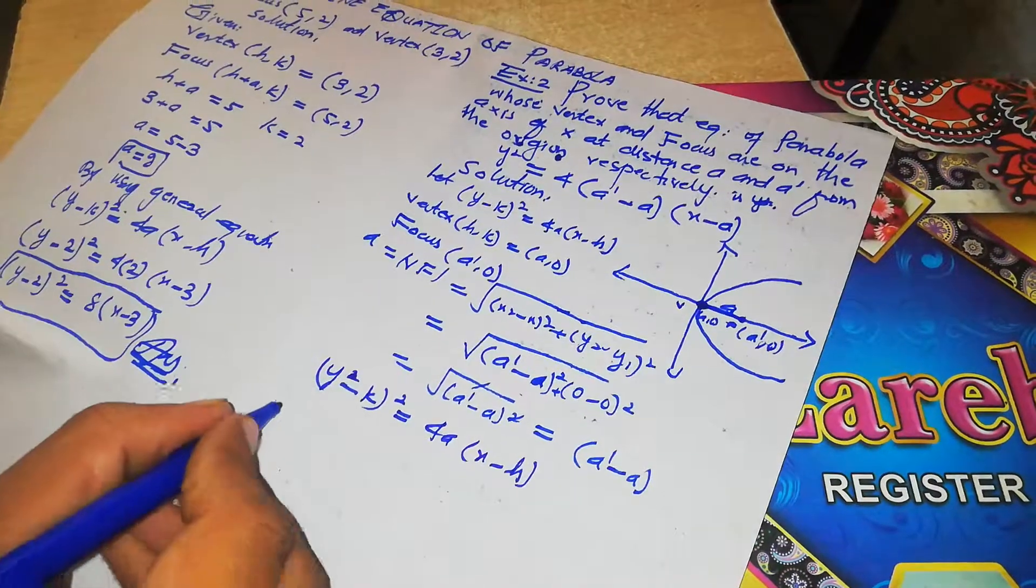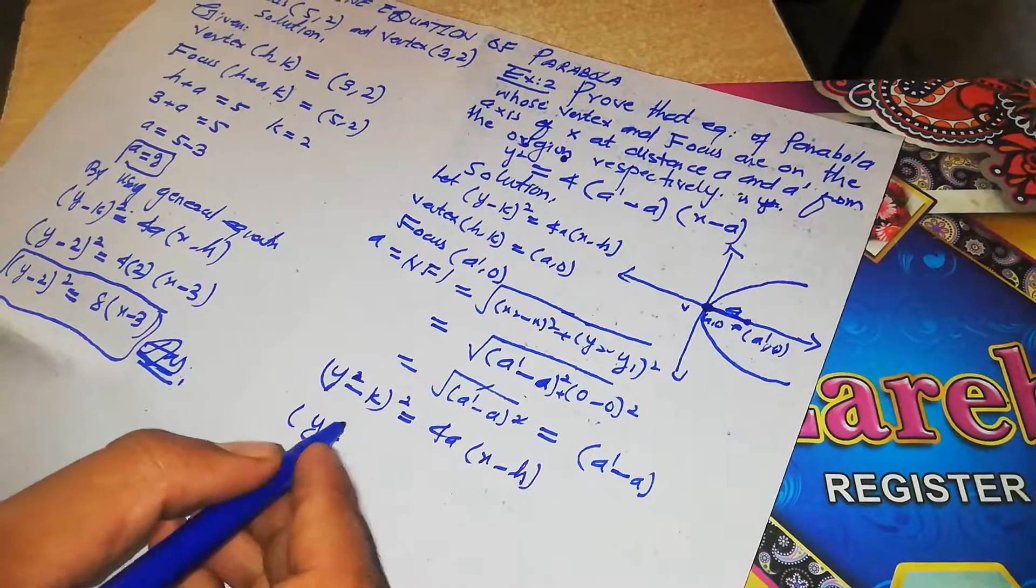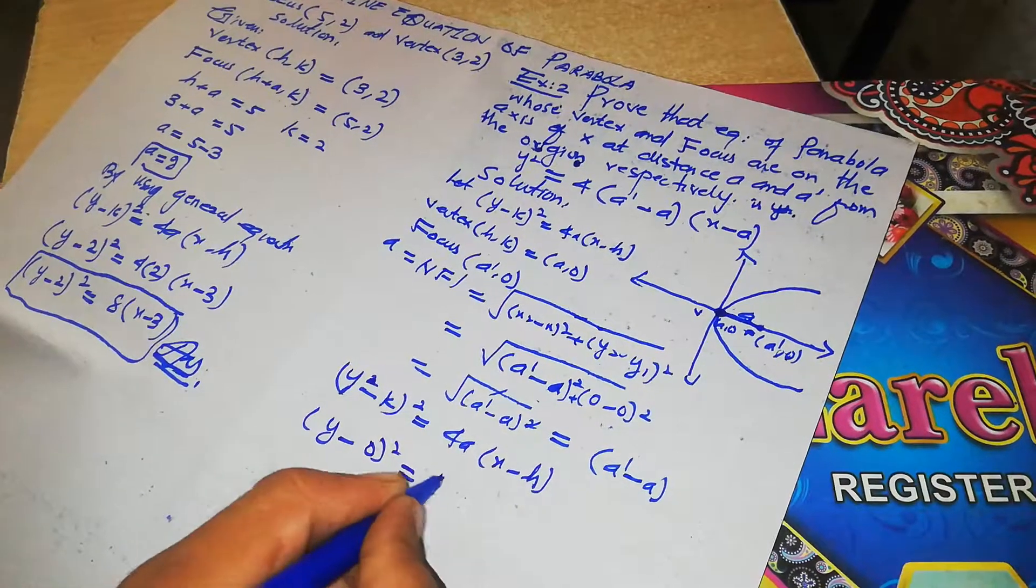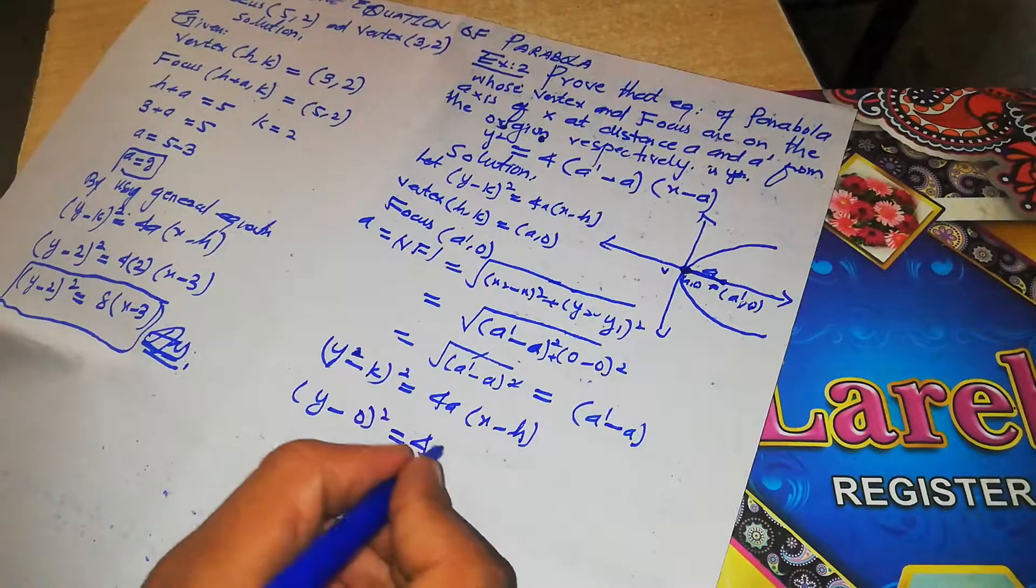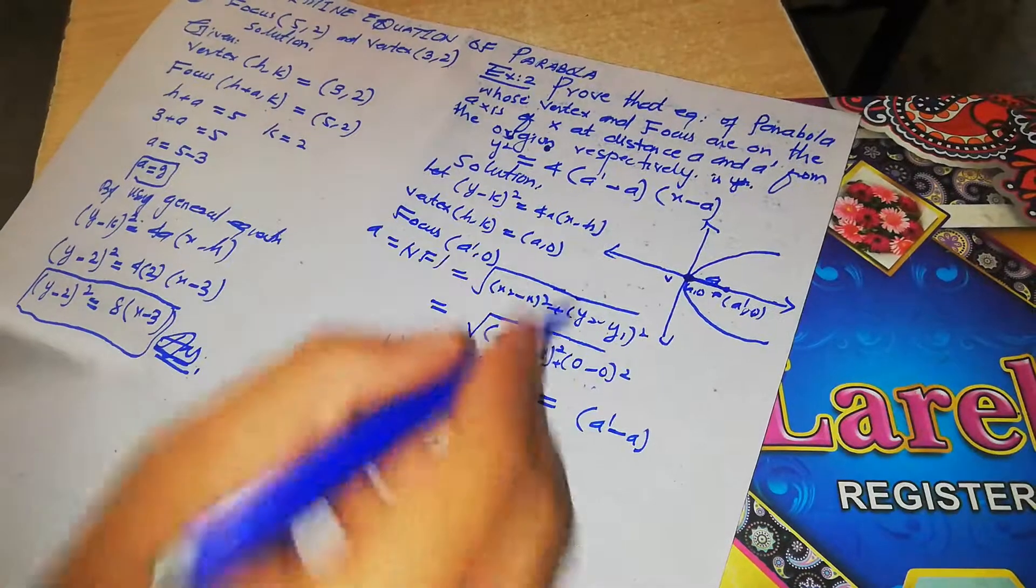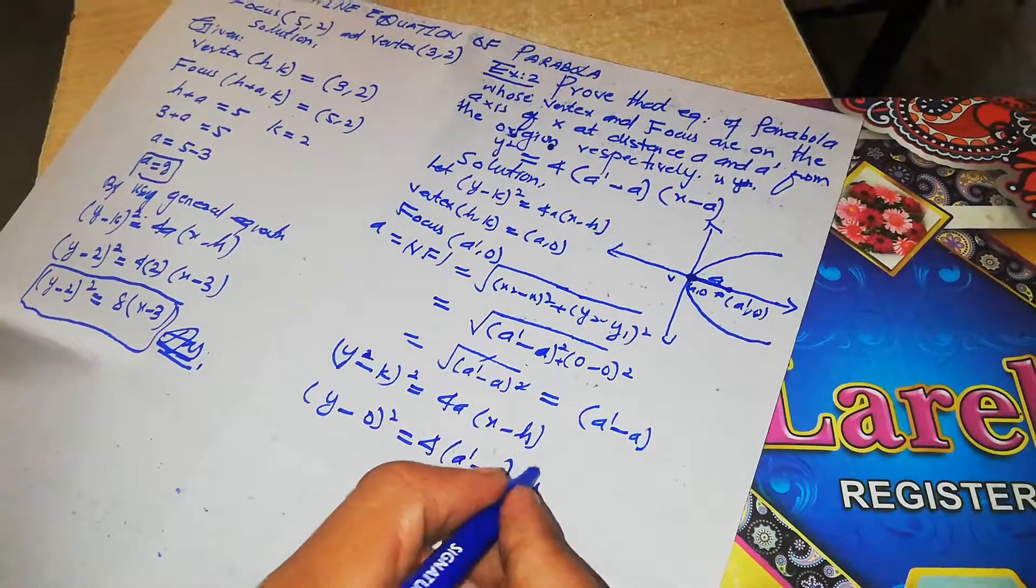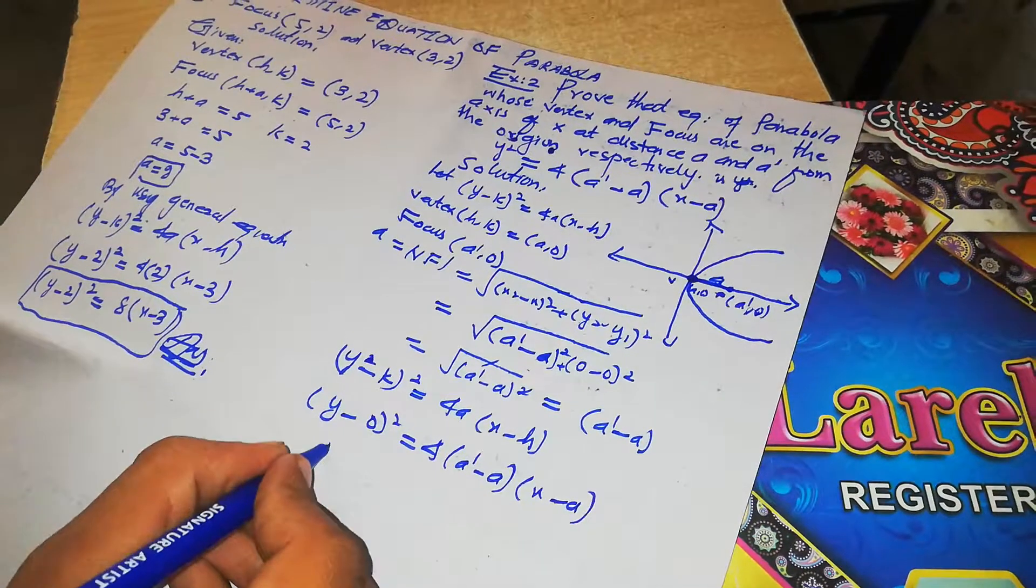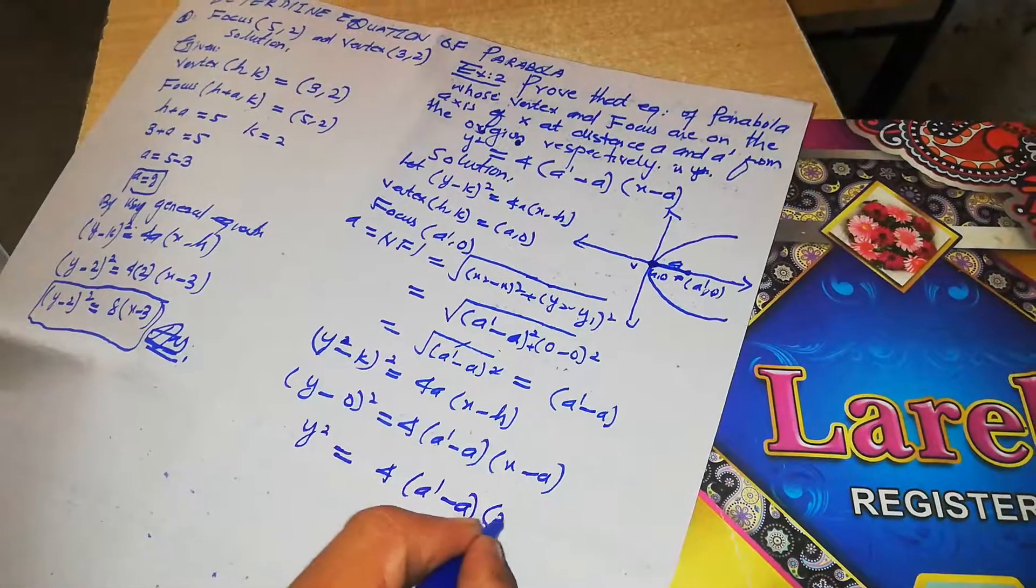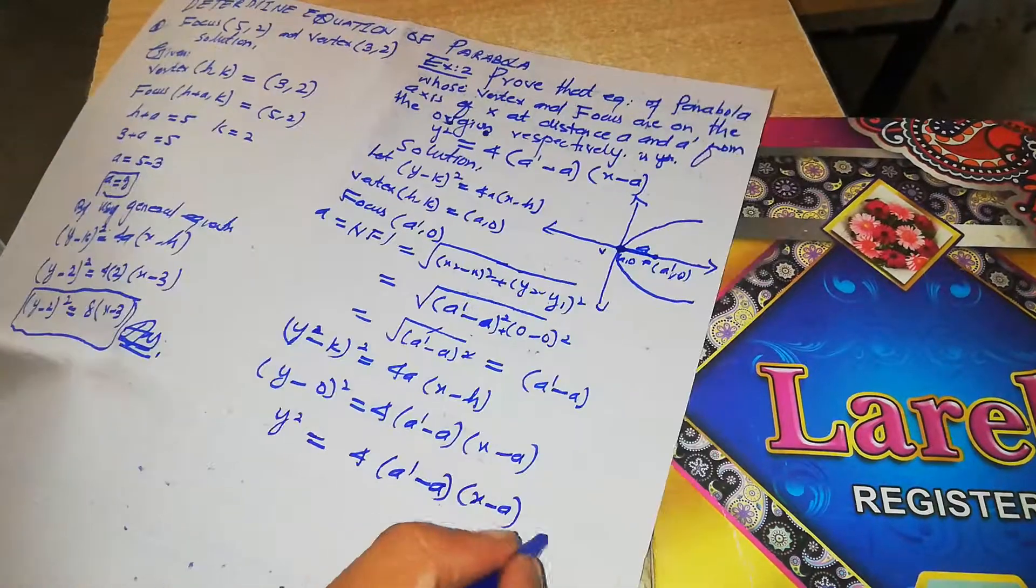What is the value of a? A prime minus a. X minus what is the value of h? The value of h is a. So this becomes y squared equals 4(a prime minus a)(x minus a). Proved.